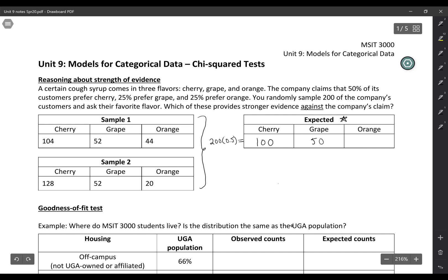50 would prefer grape, and 50 would prefer orange. Okay, so those would be the expected values if the company's claim is true.